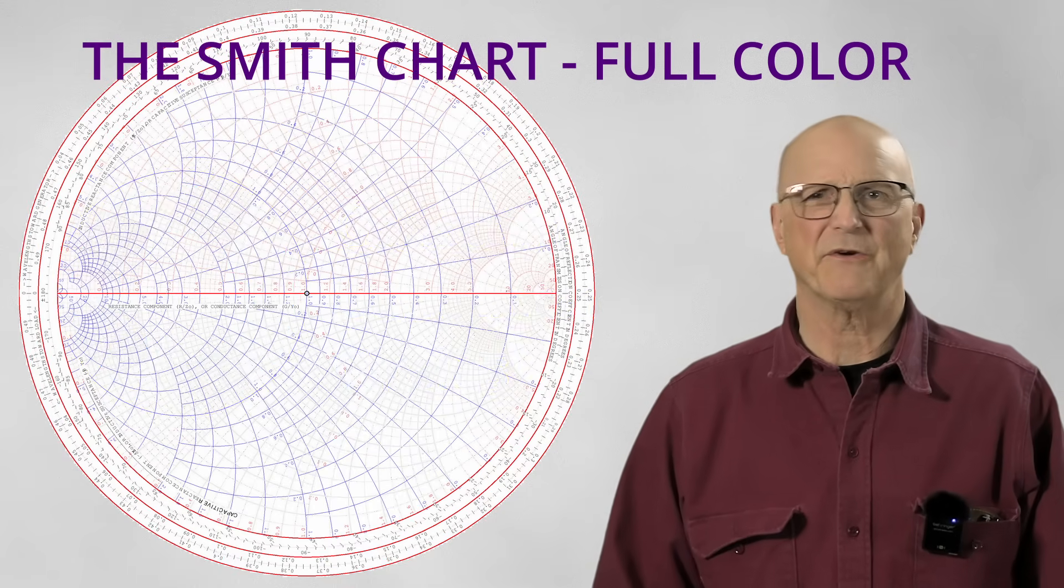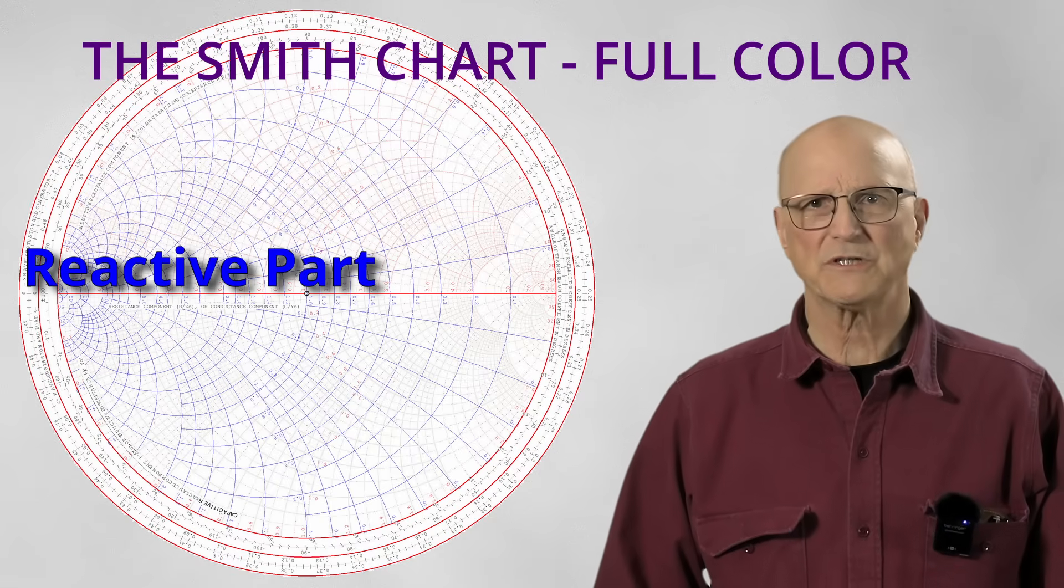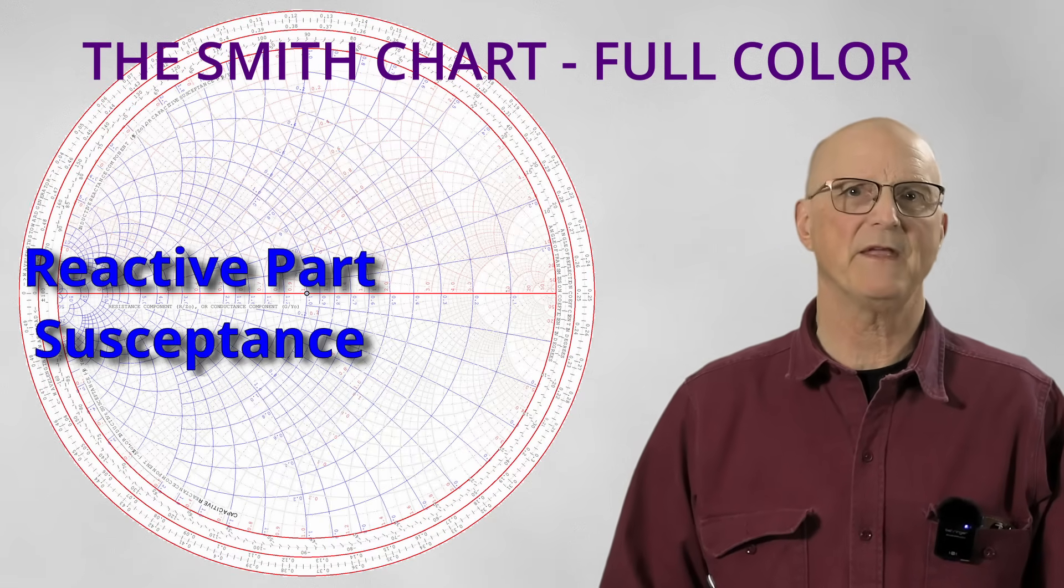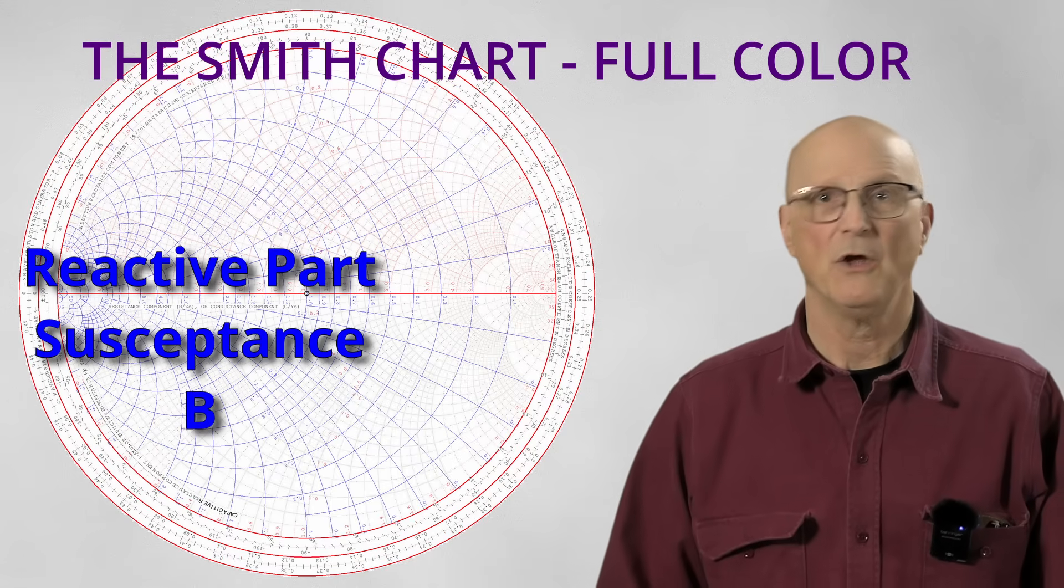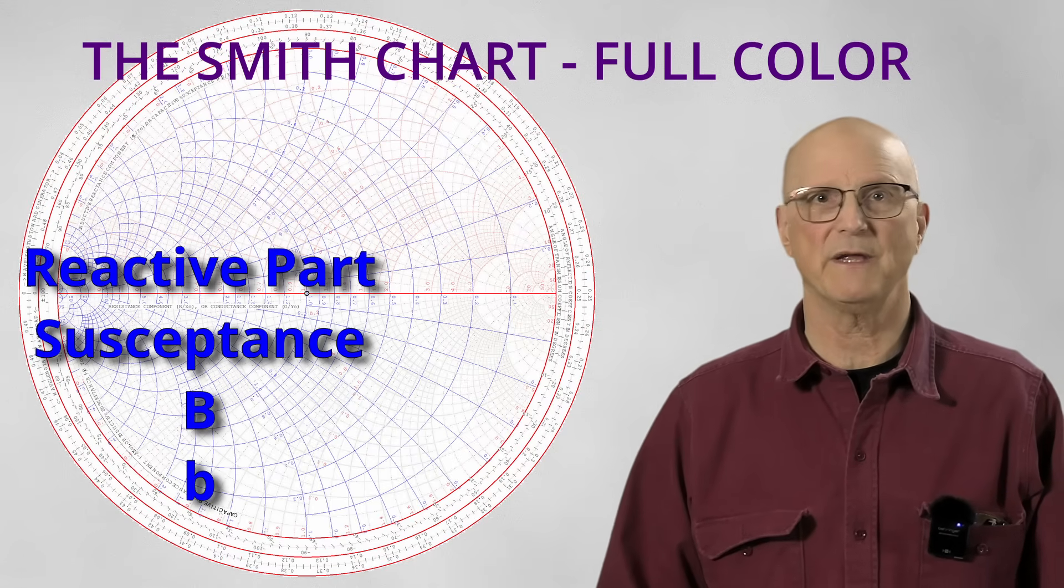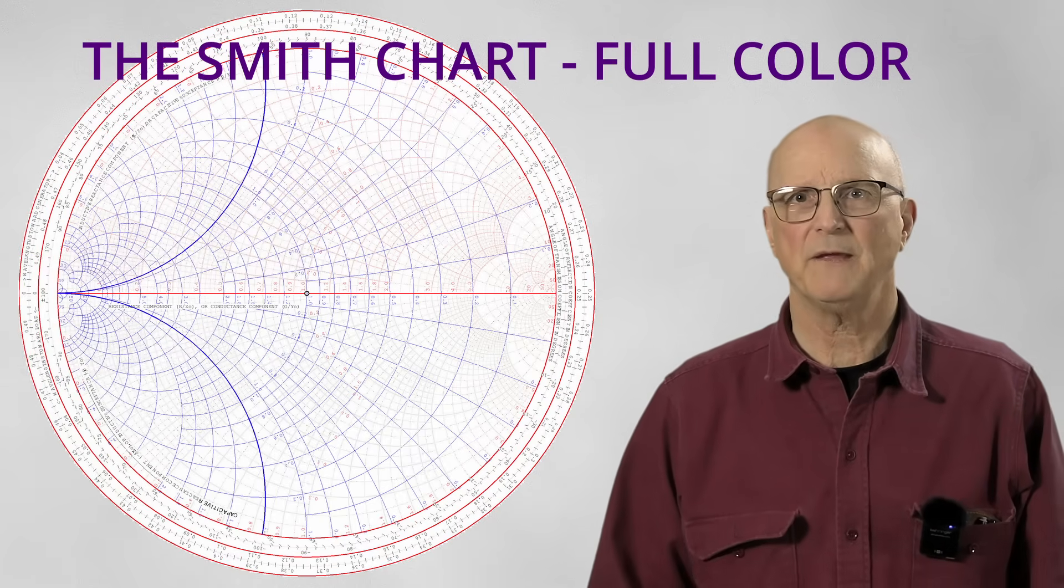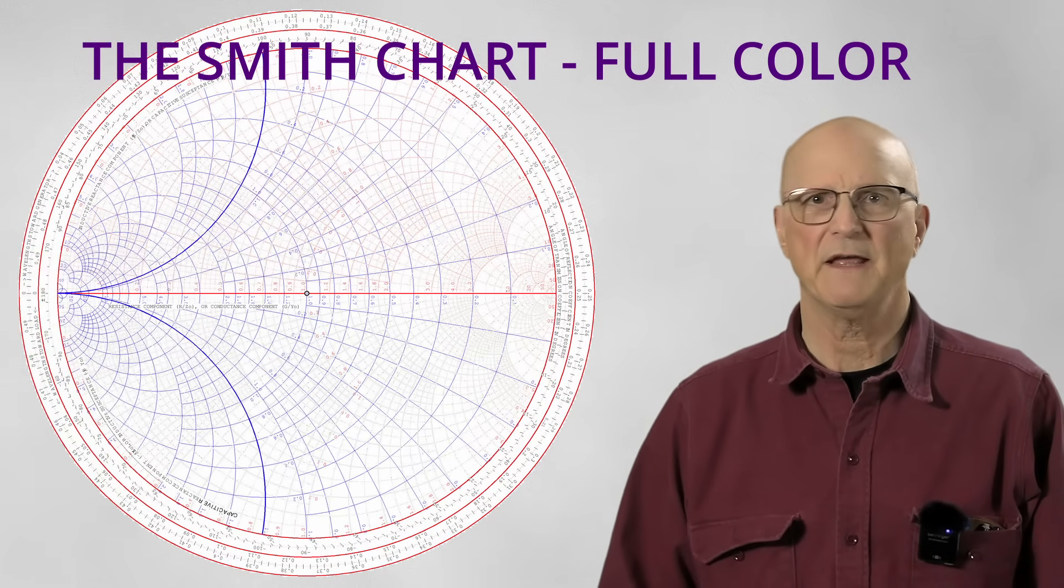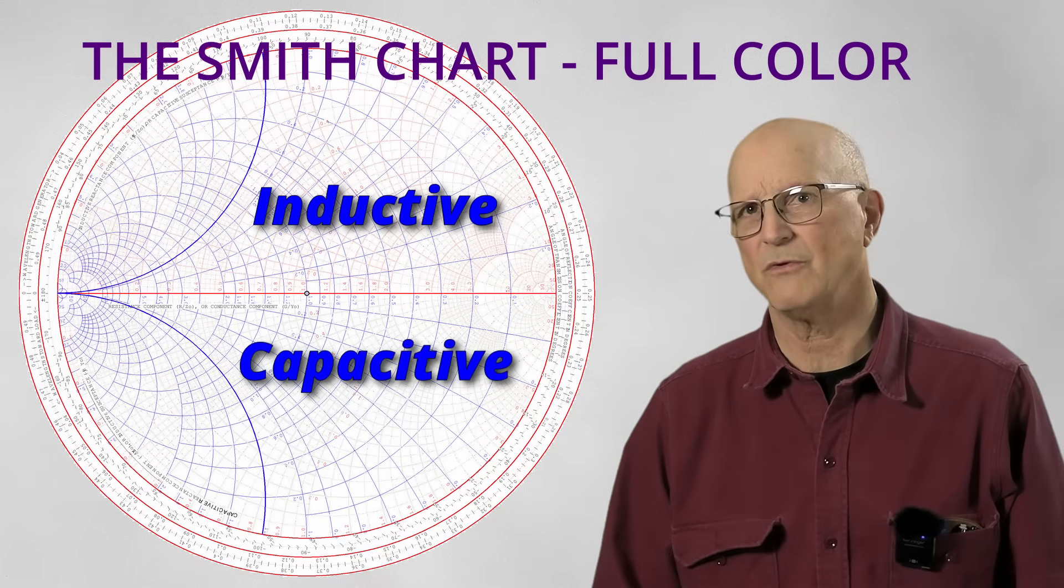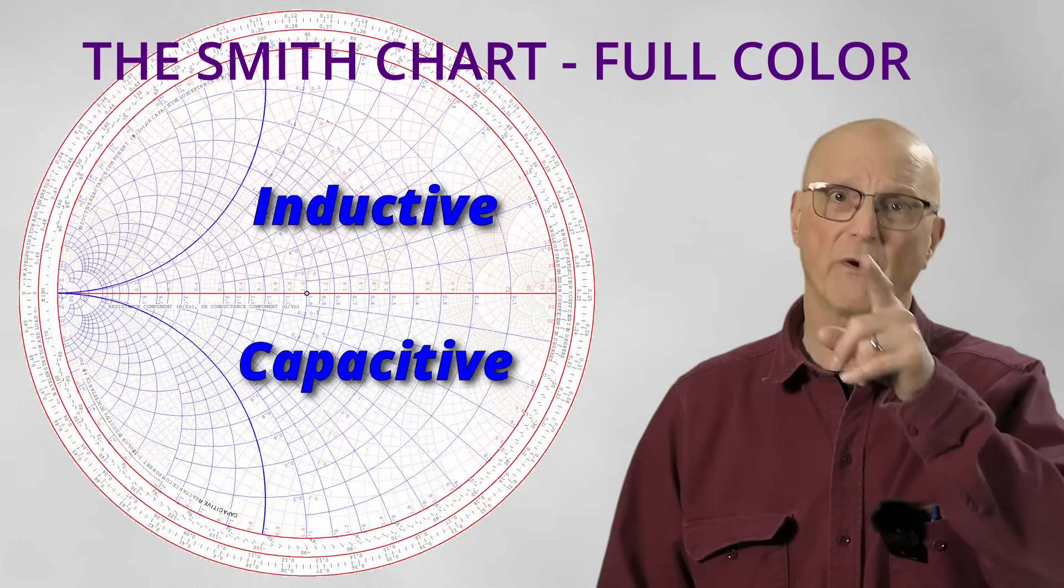But what about the imaginary or reactive part of the picture? The reactive portion of admittance is susceptance, which is traditionally represented by the uppercase B. Normalized values are represented by the lowercase b. These are the blue arcs. Like with the impedance side of the Smith chart, everything above the equator is inductive and everything below the equator is capacitive with one very important difference.